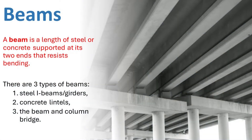Bridges must be able to carry their own weight and the weight of the vehicles that travel over them. Beams are horizontal members that resist bending. They carry weight by transferring the load to supports at either end, supporting the load from above and spanning over space. Beams can be made of steel or concrete. There are three types of beams: steel I-beams or girders, concrete lintels, and the beam and column bridge.